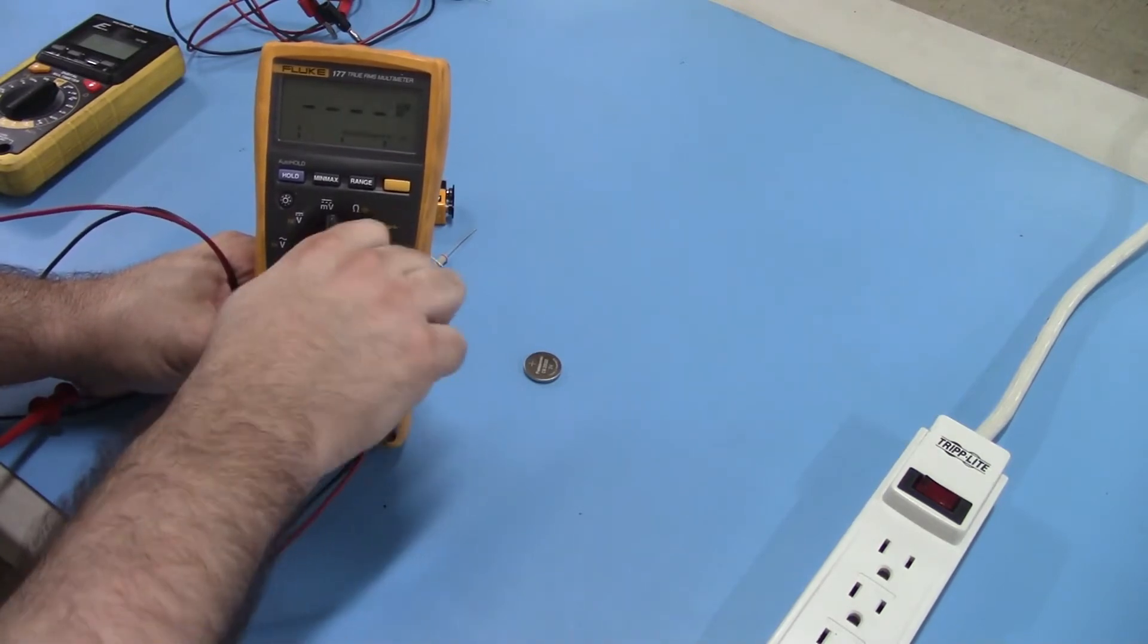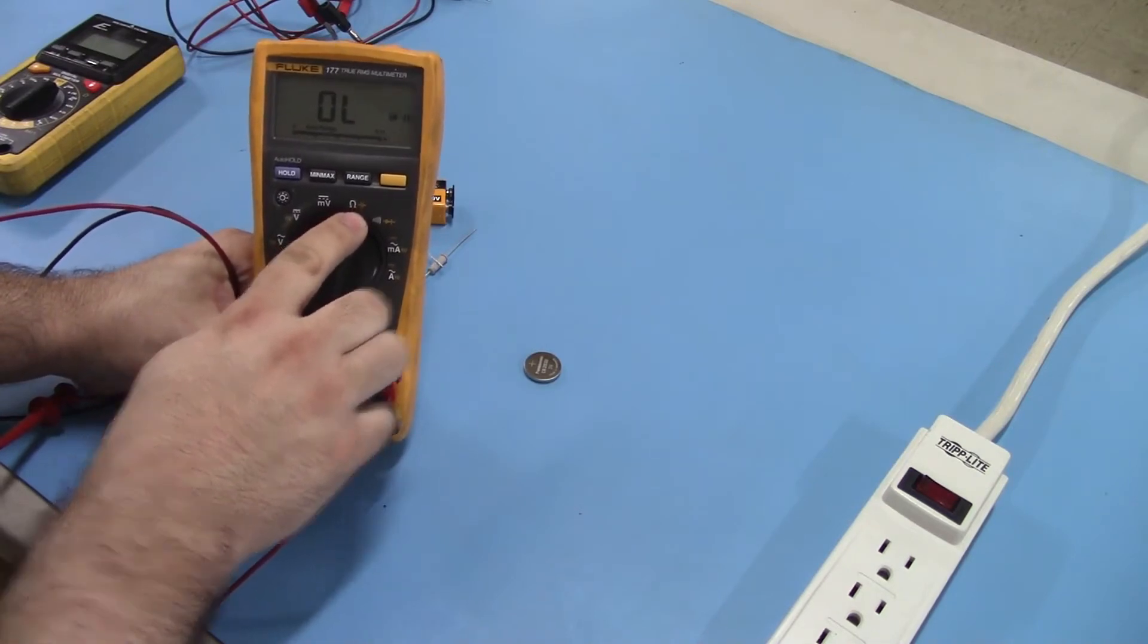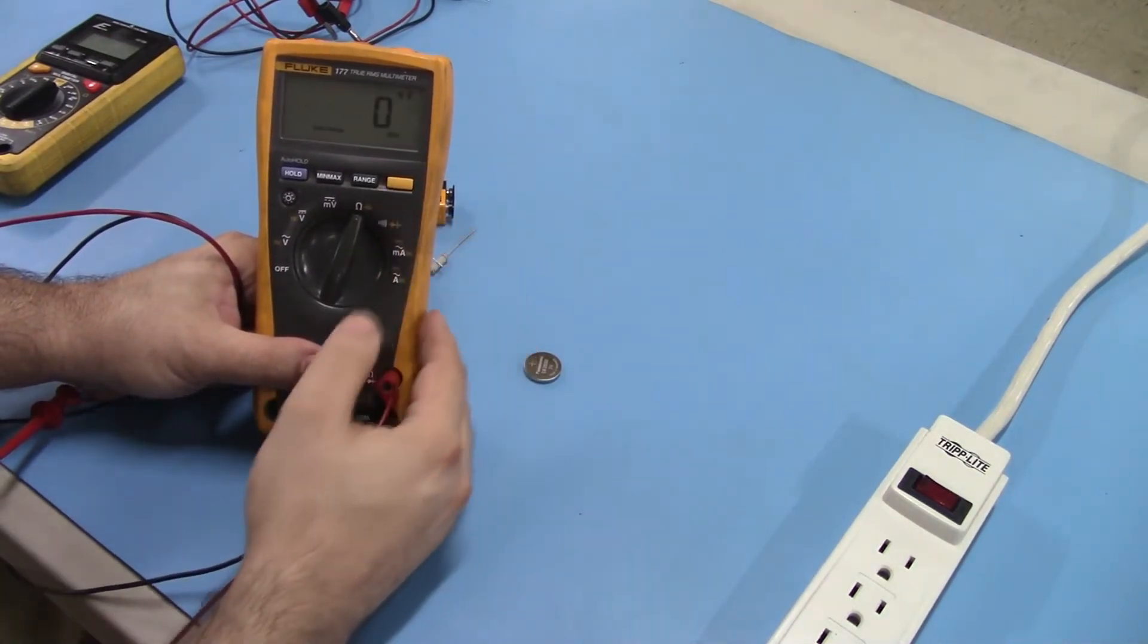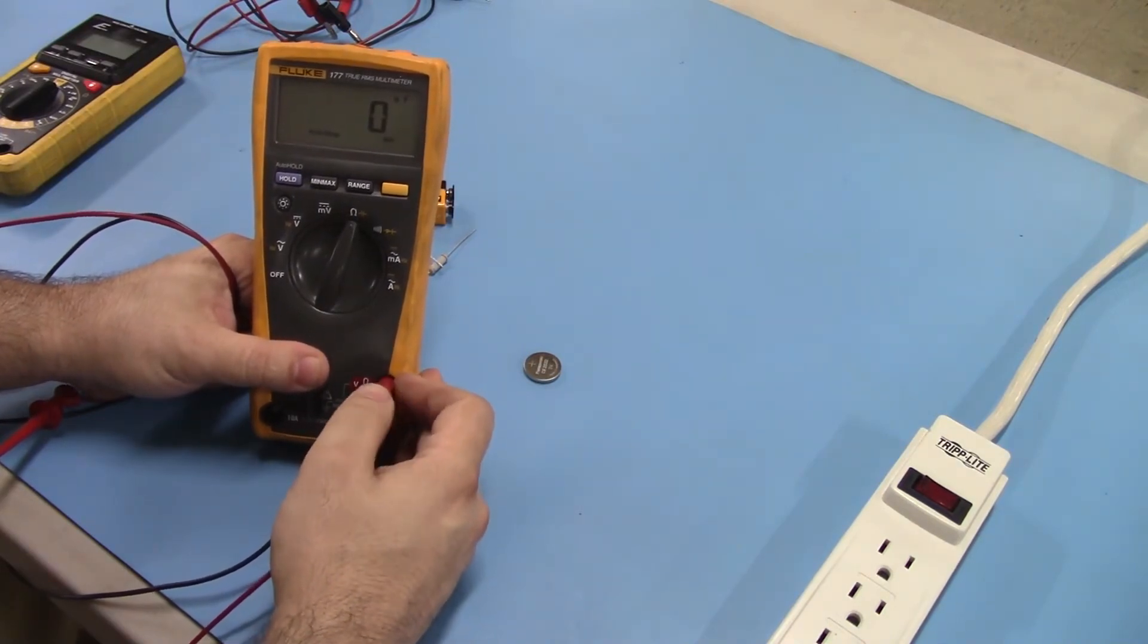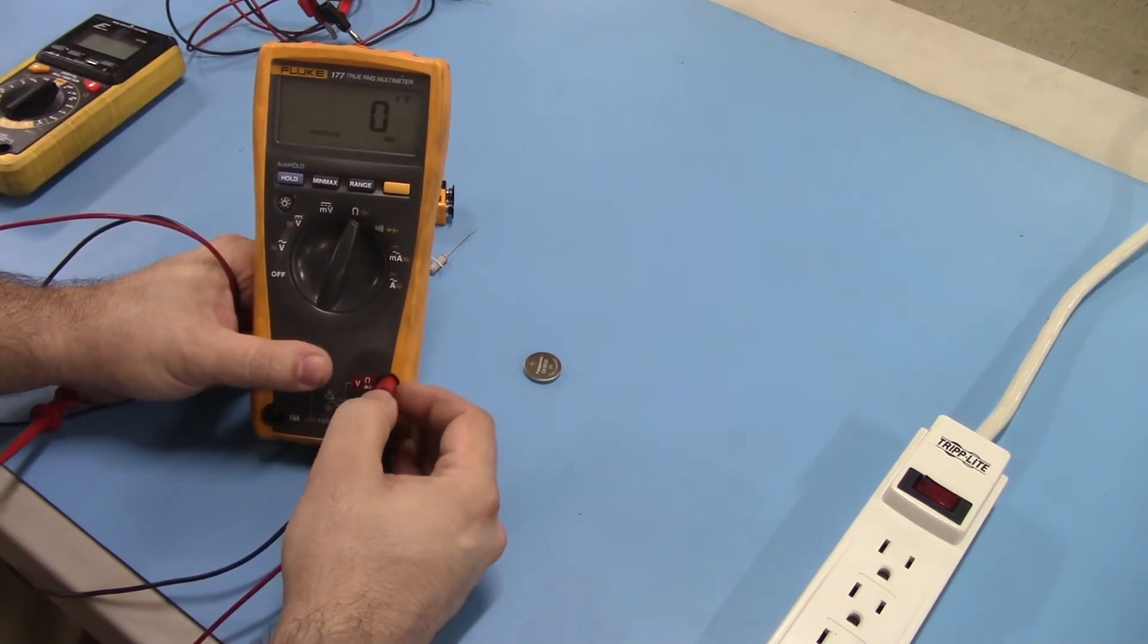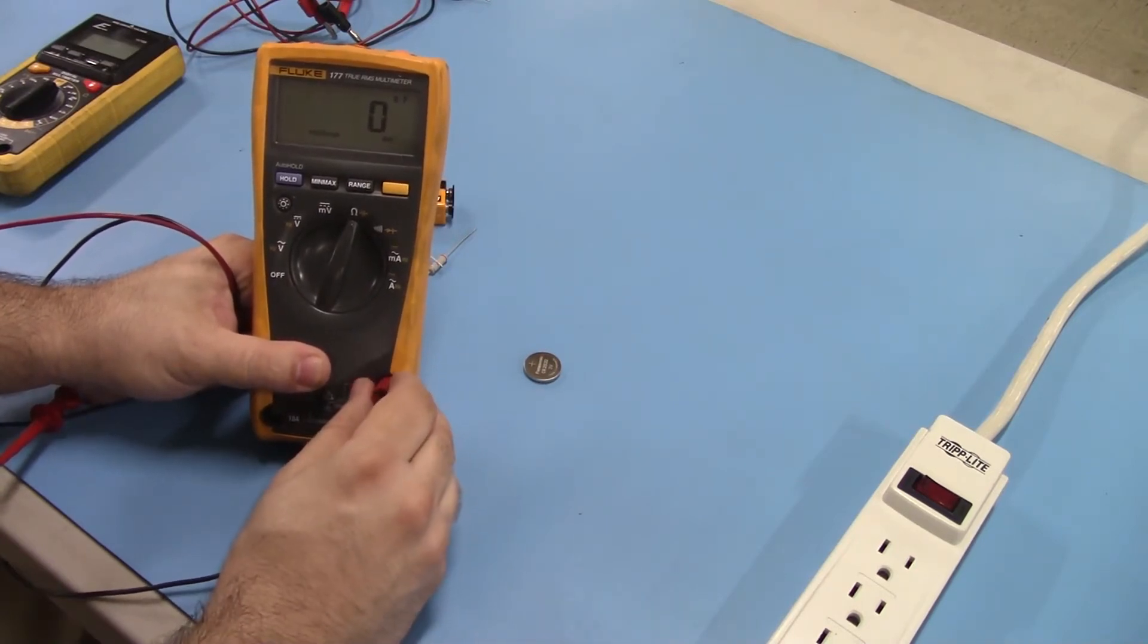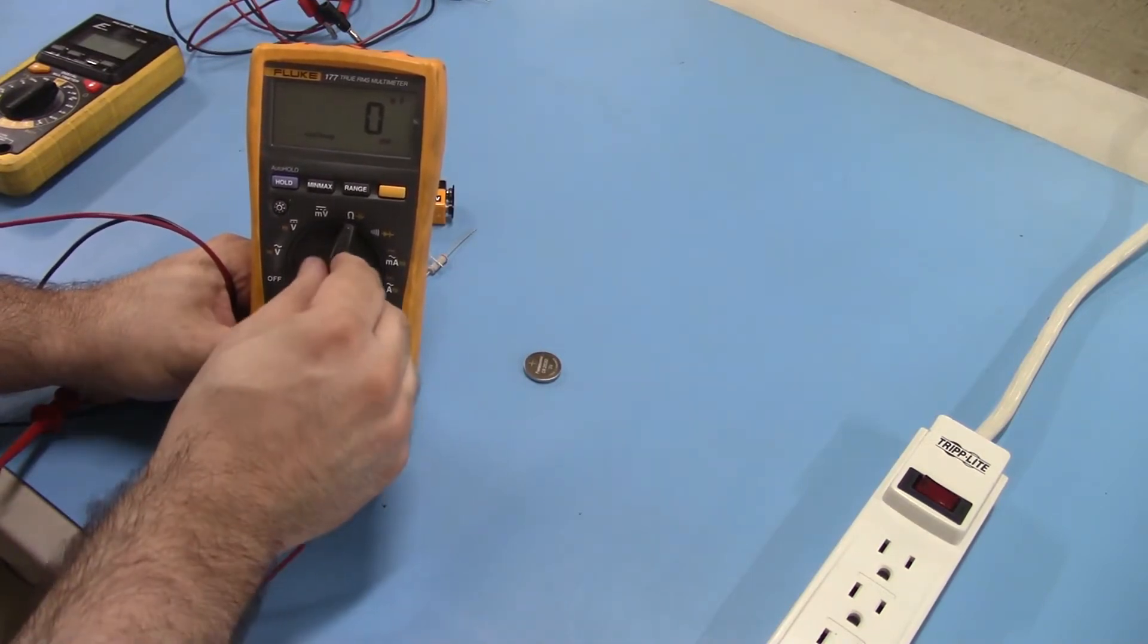If we go up here to ohms, you'll see that's where our next yellow indicator is. We push that. That gives us capacitance check. There isn't too much use for capacitance on generators. I would think probably one of the only places you might run into it would be checking the condenser on a points and condenser ignition system. That's about it.